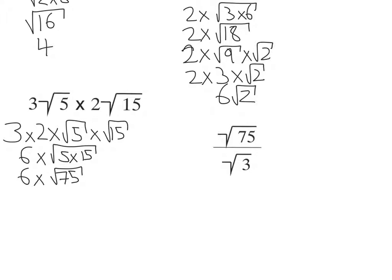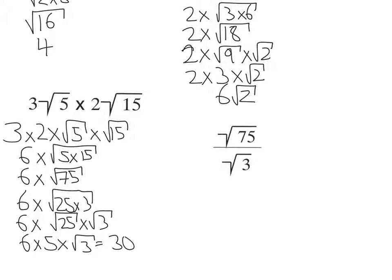And that is 25. So I have 6 times root 25 times 3. So I split out my surds here. And then root 25 is 5. So I'm going to get 6 times 5 times root 3, which would be the same as 30 root 3.